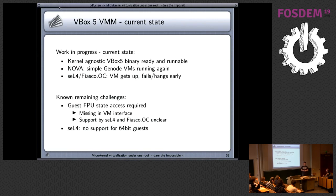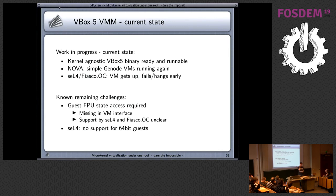The next step was getting VirtualBox 5 running, because that gives you support for Windows 7, Windows 10, Ubuntu, and whatever else. This is currently a work in progress. The VirtualBox binary is already kernel-agnostic — same compilation. It starts running on Nova quite fine for some simple Genode VMs. For seL4 and Fiasco OC, it comes up to some point but something is still not correct. Known remaining challenges: VirtualBox 5 requires access to FPU state — Nova has this in principle but it's currently missing in the VM interface. For seL4 and Fiasco OC, I'm not sure whether FPU state access is supported. Also, seL4 has no 64-bit guest support, meaning you won't get Windows 10 running at all.